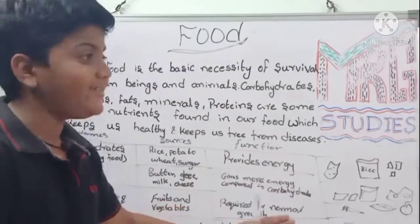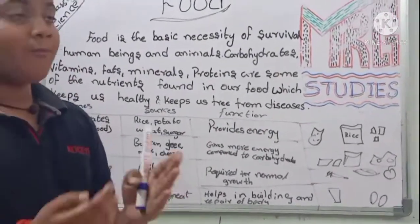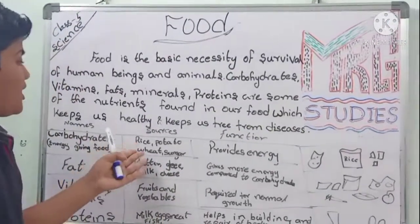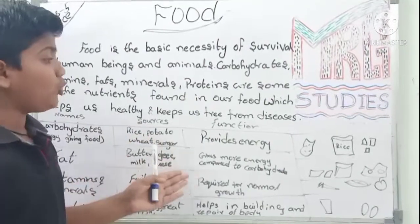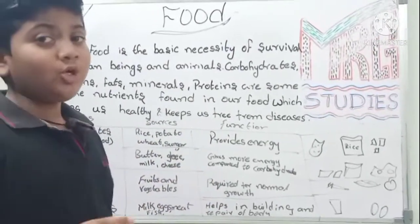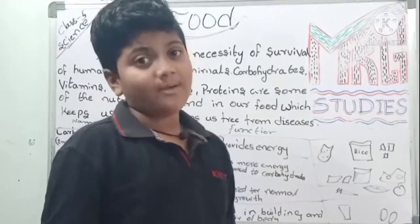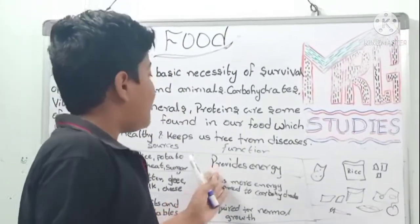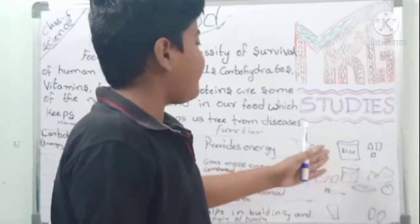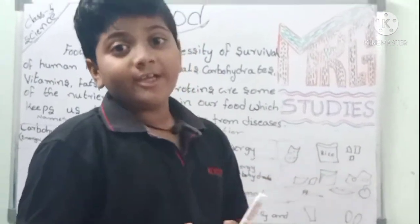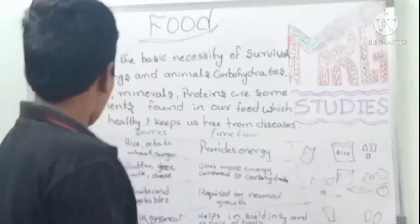Carbohydrates are energy-giving food. Rice, potato, wheat, and sugar are examples. Sugar and potatoes have very high carbohydrates. Rice also provides energy. When we are very hungry and eat rice, it gives us energy.